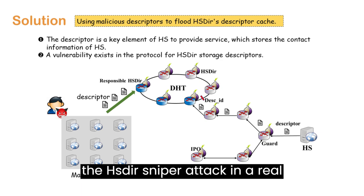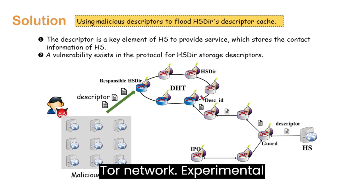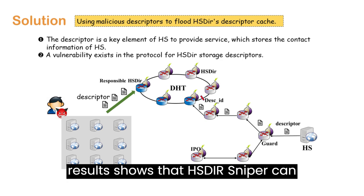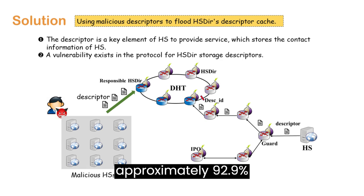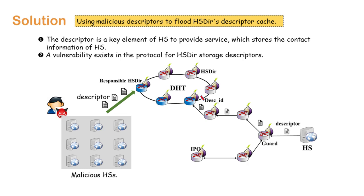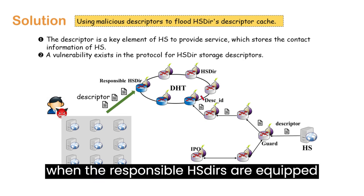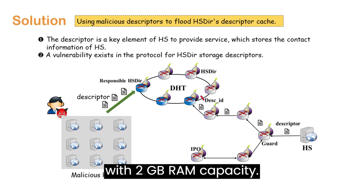We deployed the HSDIR sniper attack in a real Tor network. Experimental results show that HSDIR sniper can render a hidden service inaccessible for approximately 92.9% of its operational duration, when the responsible HSDirs are equipped with a 2GB RAM capacity.